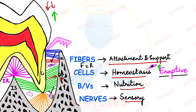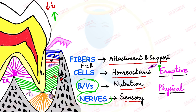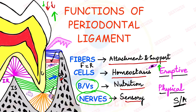There is one function called physical — it protects the blood vessels and nerves. Whenever forces are there, these forces are transferred into the bone with the help of the fibers. This function of the PDL is called shock absorption, where it prevents the impact of heavy forces. So we can say that there are six functions of the periodontal ligament.